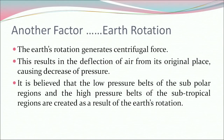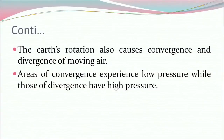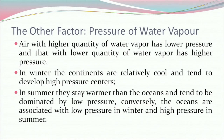Another factor is earth's rotation. The earth's rotation generates centrifugal force, resulting in the deflection of air from its original place causing decrease of pressure. It is believed that the low pressure belts of the subpolar region and the high pressure belts of the subtropical regions are created as a result of the earth's rotation. The earth's rotation also causes convergence and divergence of moving air. Areas of convergence experience low pressure while those of divergence have higher pressure. Another factor is the presence of water vapor. Air with higher quantity of water vapor has lower pressure, and that with lower quantity has higher pressure. In winter, continents are relatively cool and tend to develop high pressure centers. In summer, they stay warmer than the oceans and tend to be dominated by low pressure. Conversely, the oceans are associated with low pressure in winter and high pressure in summer.